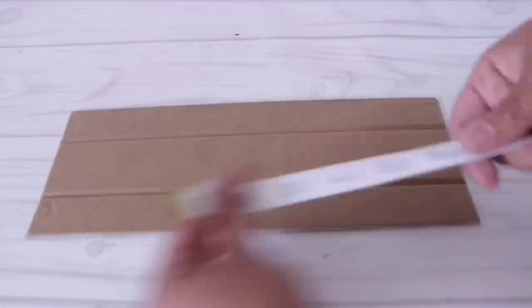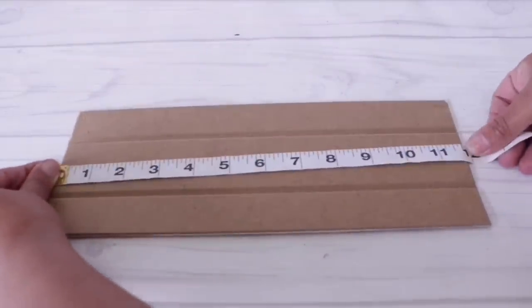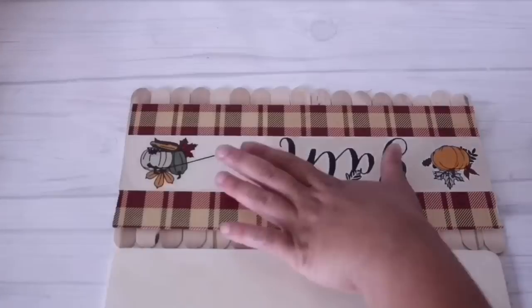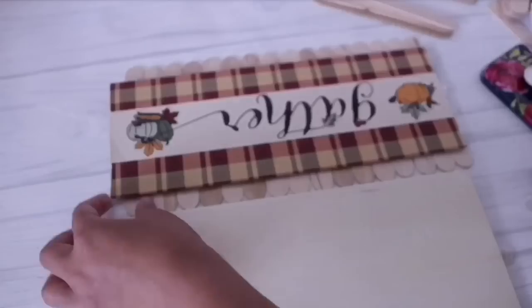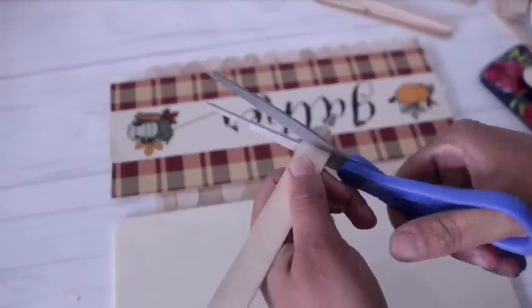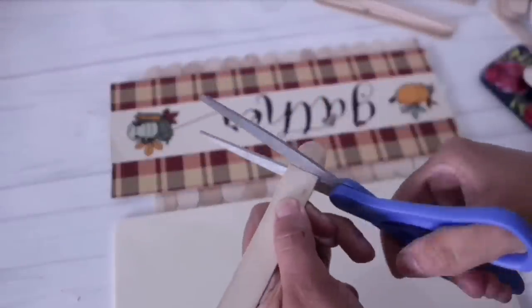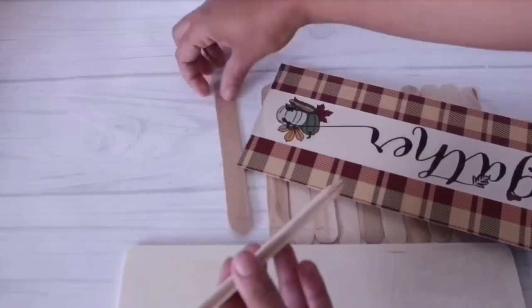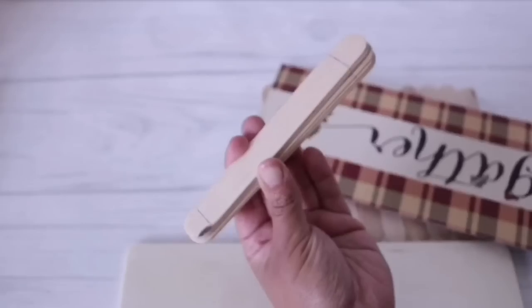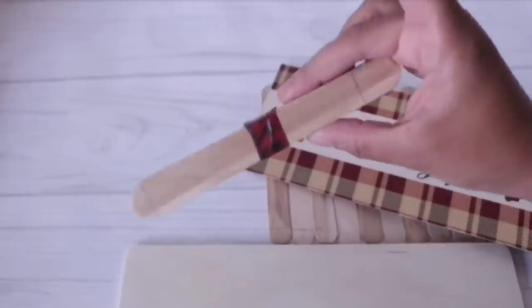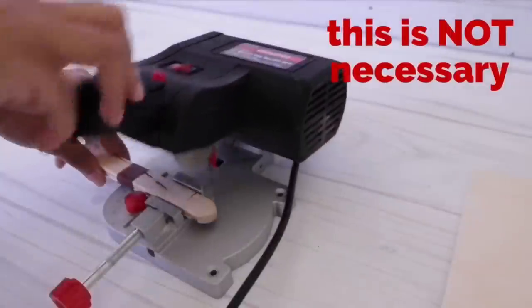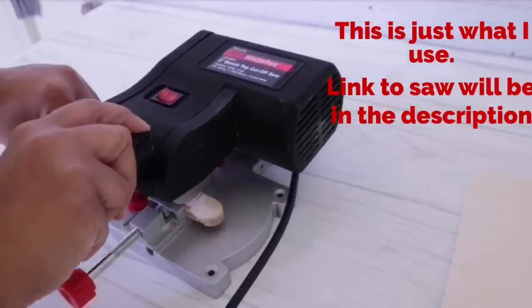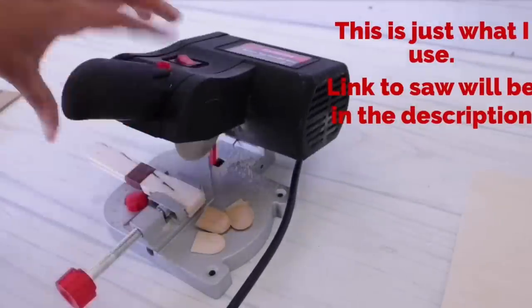If I were to do this all over again maybe I would do it with that, but I really liked how this turned out. I'm going to measure this and then I'm going to grab some Dollar Tree popsicle sticks and line them up. I'm going to measure them out the same way that I did the frame. It just makes it so much neater and then I'm going to cut them down.